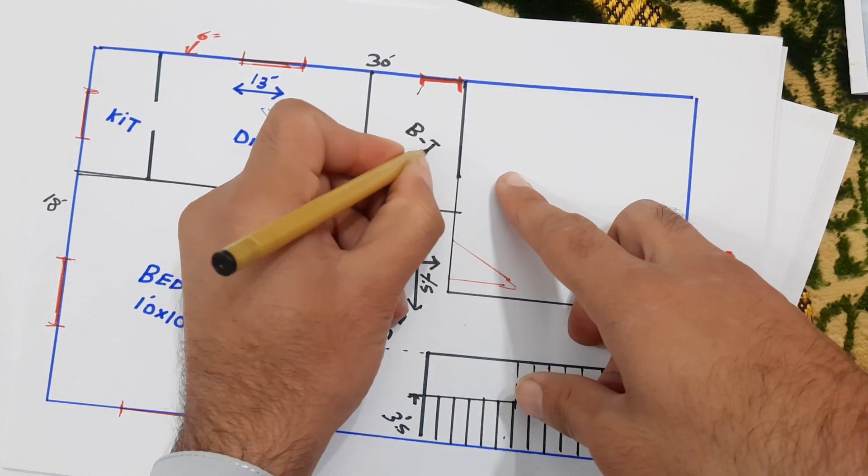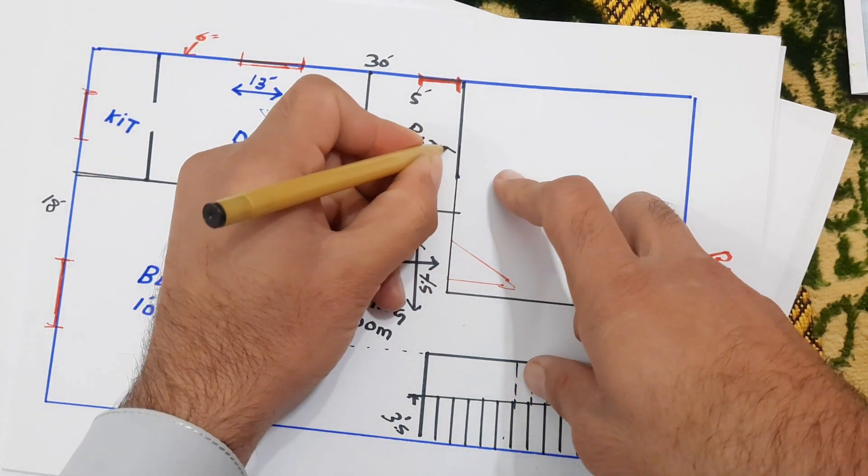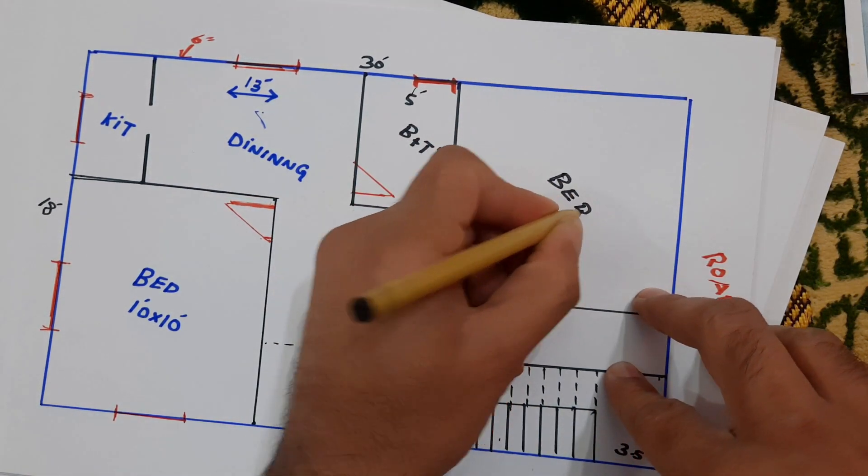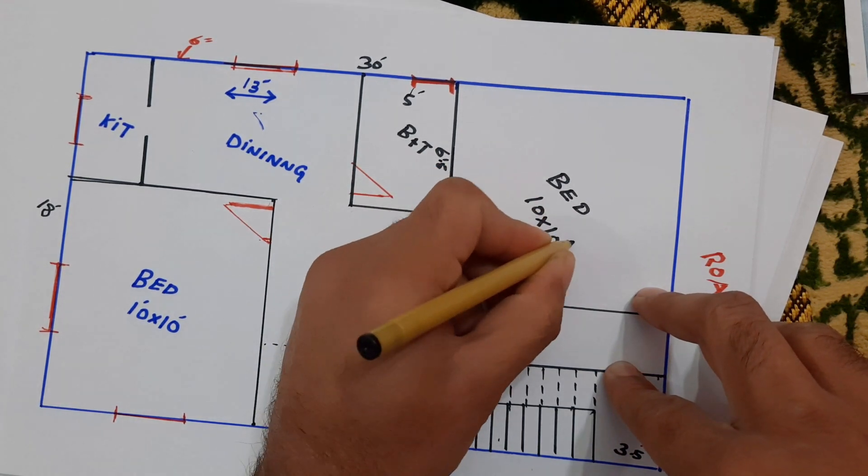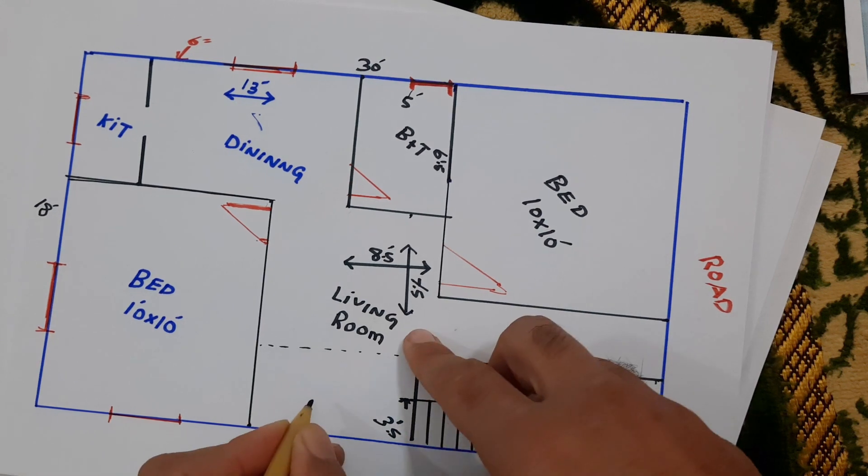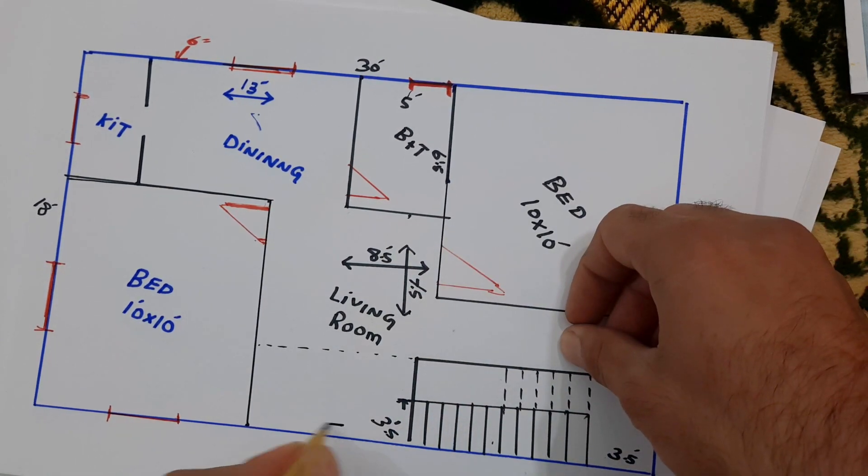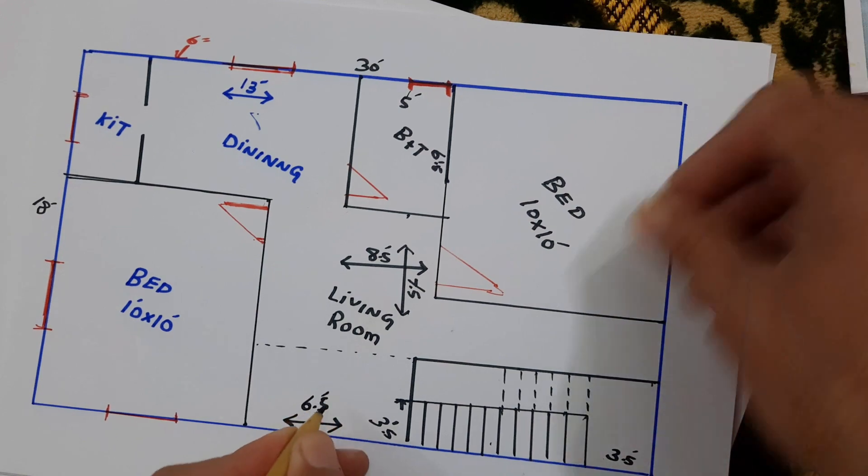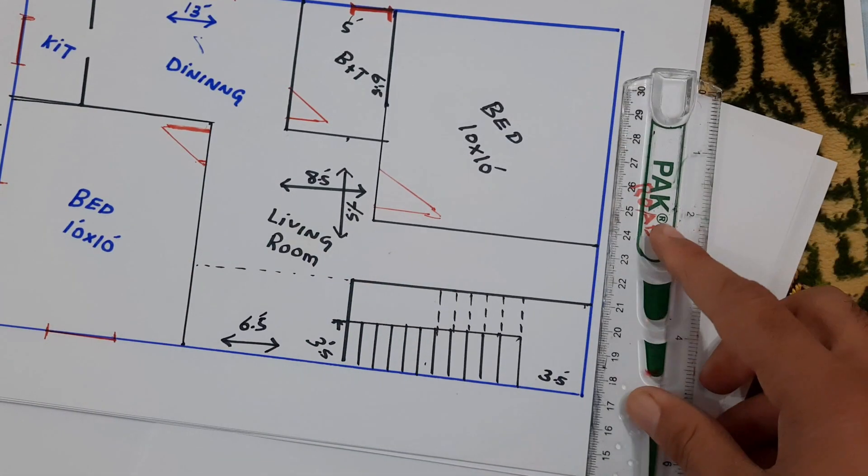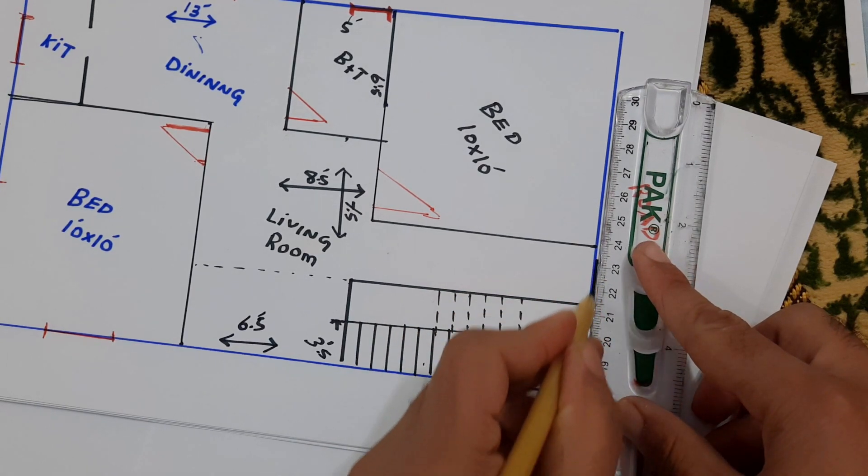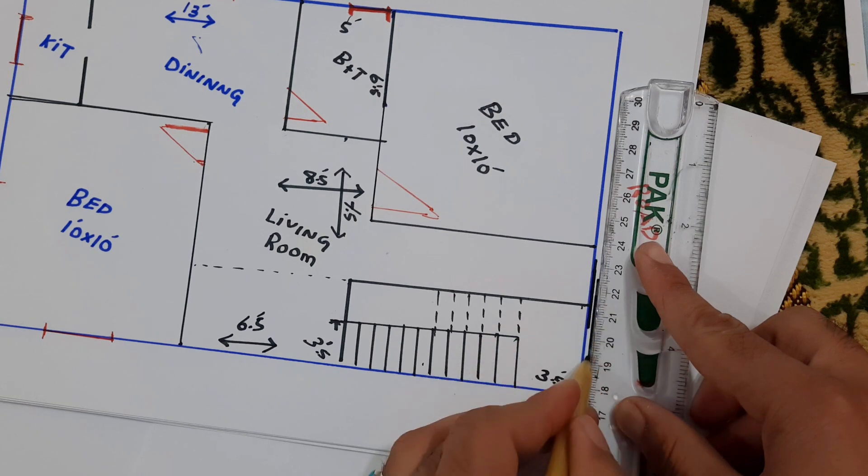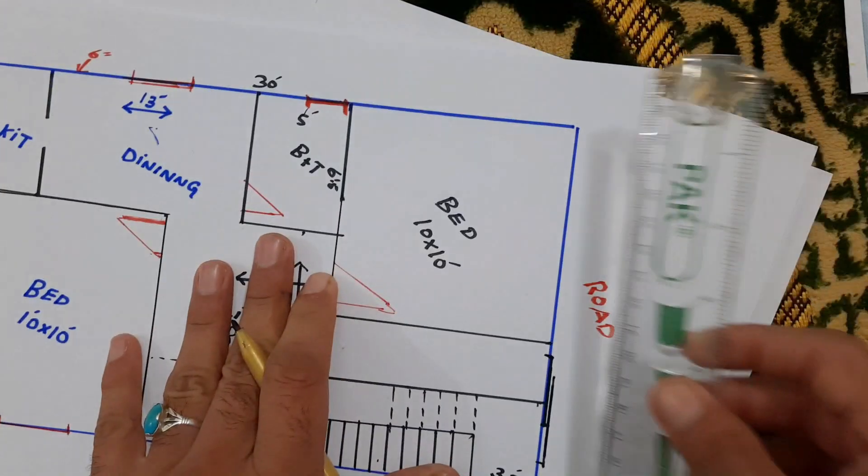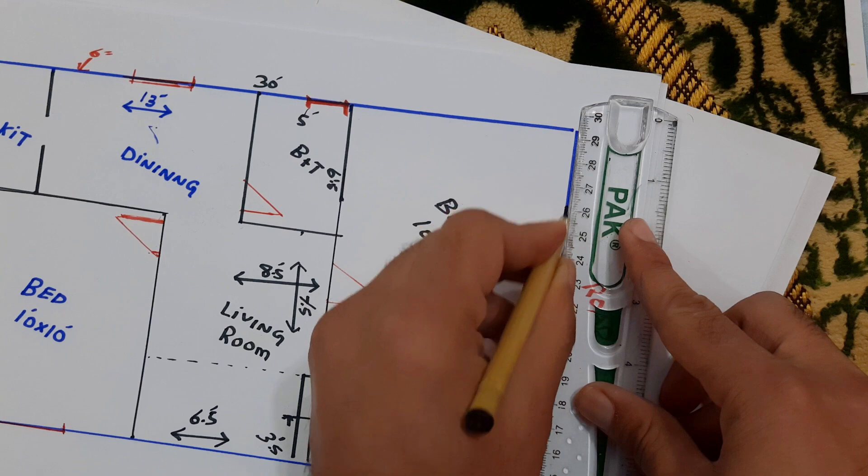Bath plus toilet, this is 5 feet by 6 feet, 6.5 feet. This is the other second bed which is 10 by 10 feet. Now guys, here you can see we have the free space, this one, which is 6.5 feet. Here you can make a slide door for this main entrance.